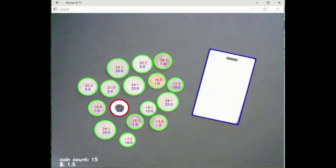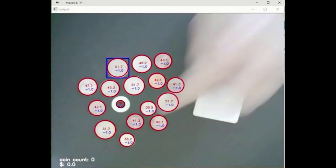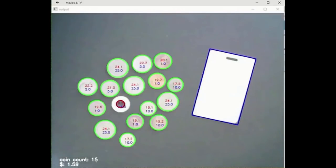Each frame identifies the valid coins with green around the boundary. The center of the coin is labeled with the diameter in millimeters in red, and the cent value in blue. A disqualified object is circled in red. The total number of coins and the total currency is displayed in the lower left corner.